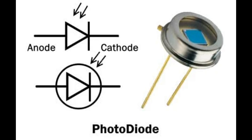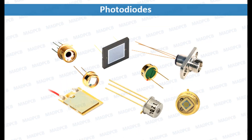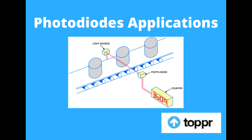Applications in harsh environments: Photodiodes can be designed to operate in harsh environmental conditions, such as extreme temperatures and high radiation areas, expanding their usability in diverse fields. Photodiodes are highly advantageous due to their sensitivity, speed, linearity, low power consumption, and versatility. These characteristics make them indispensable in numerous applications across various industries, from telecommunications and medical devices to environmental monitoring and consumer electronics.